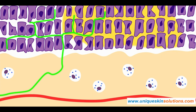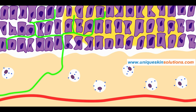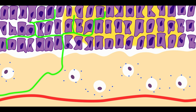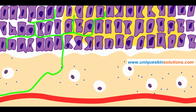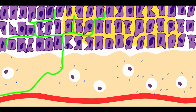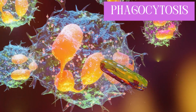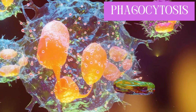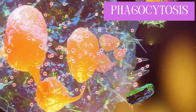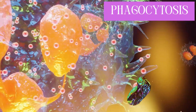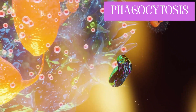The damaged tissue causes release of histamine, which triggers vasodilation and increases the permeability of the blood vessels. This in turn increases the delivery of white blood cells, which help remove microbes and foreign particles via phagocytosis.